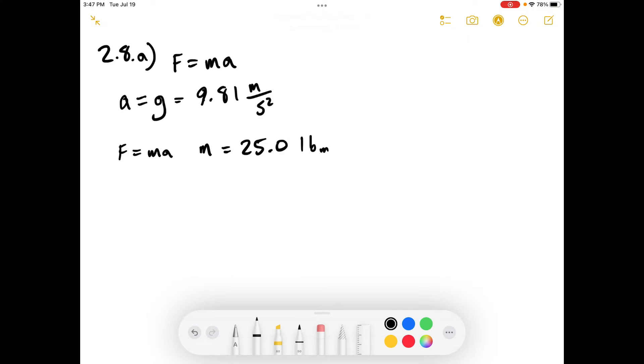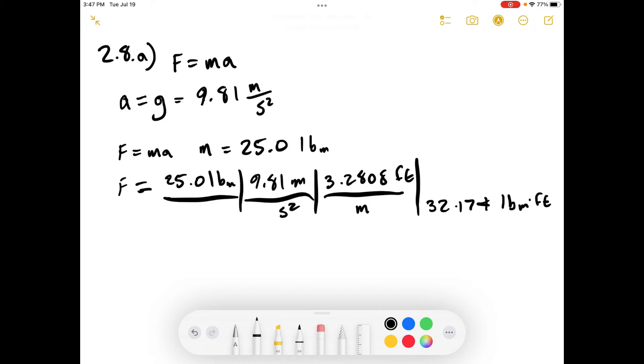And we just said what the acceleration was. So let's solve for what the force is in pounds force. Okay, so 25 pounds mass, acceleration due to gravity is 9.81 meters per second squared. And then we have 3.2808 feet per meter. And then we have 32.174 pounds mass feet per second squared equals pounds force.